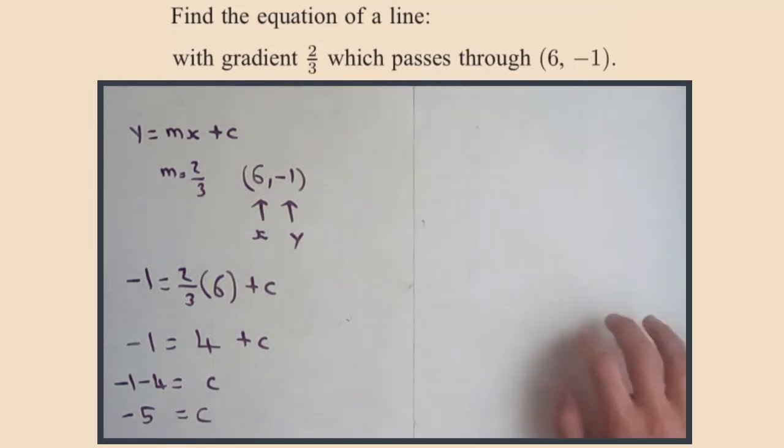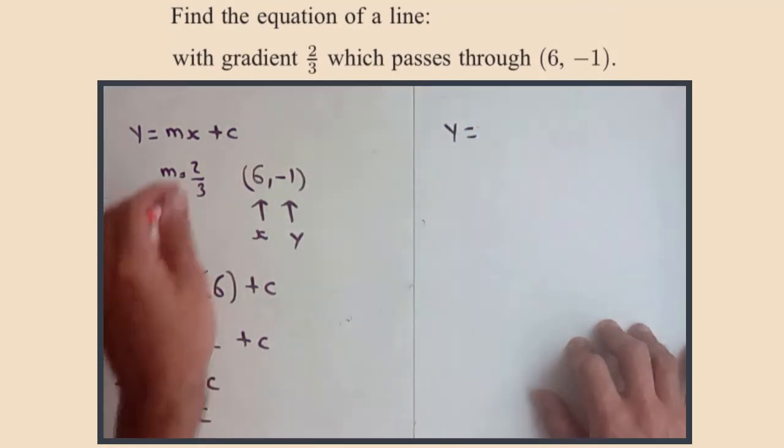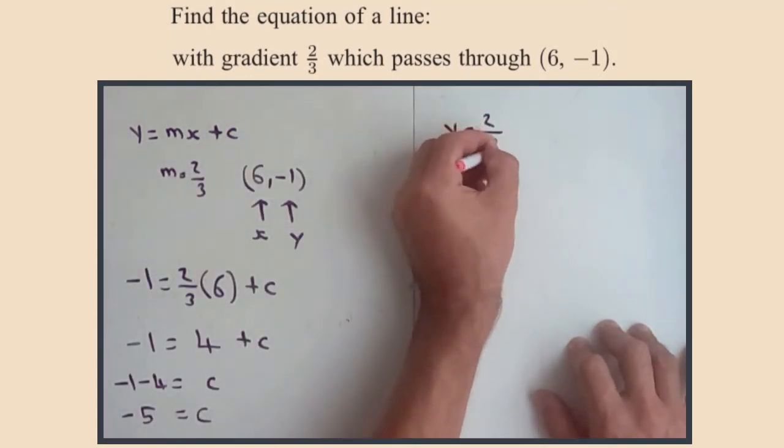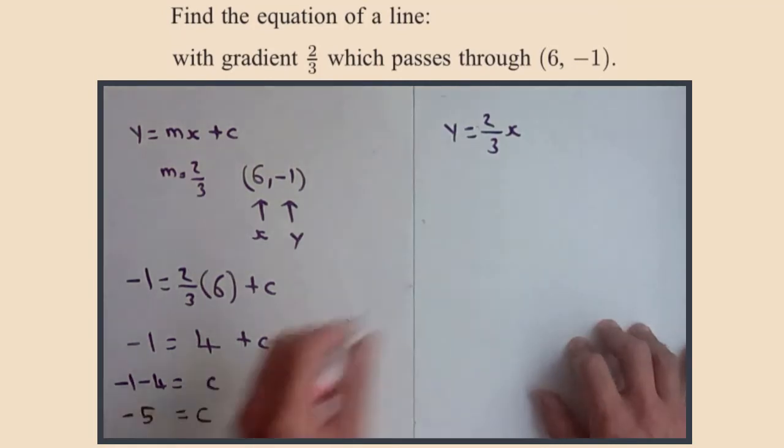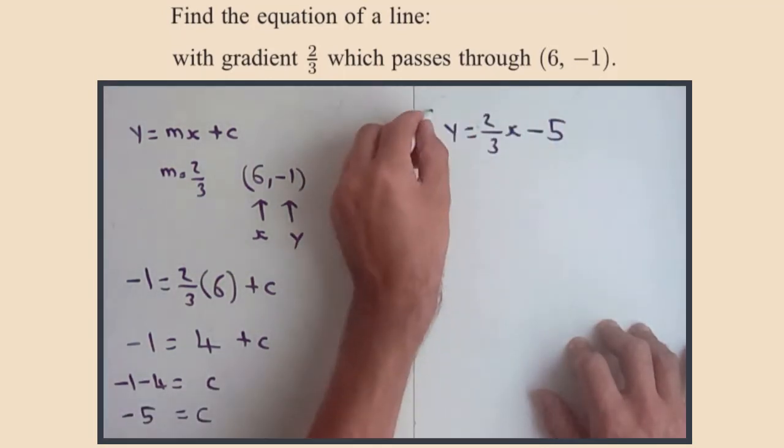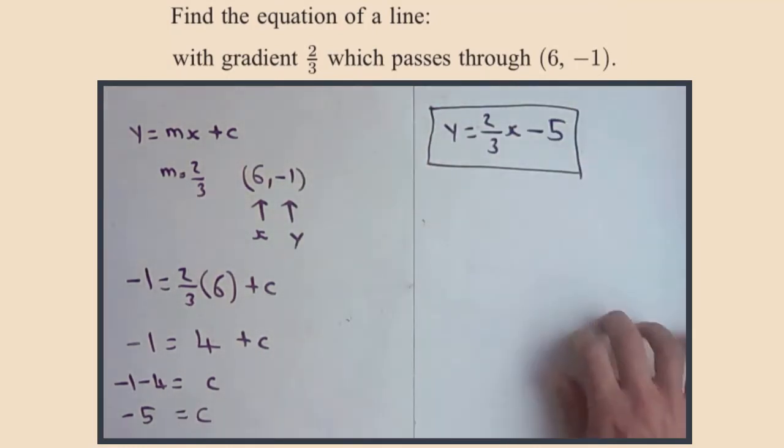So all we need to do is use y equals mx plus c. So y equals m, two-thirds, x minus five.